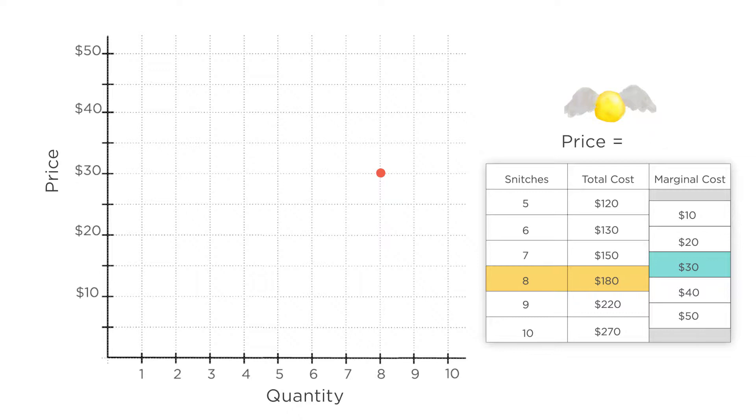If the price were different, the firm would make a different choice. Say the price of a snitch was $10. For the marginal cost to be equal to the price and profit to be maximized, the firm would need to produce six snitches. And if the price was $20, the firm would want to produce seven snitches to get marginal cost equal to price, maximizing profit.